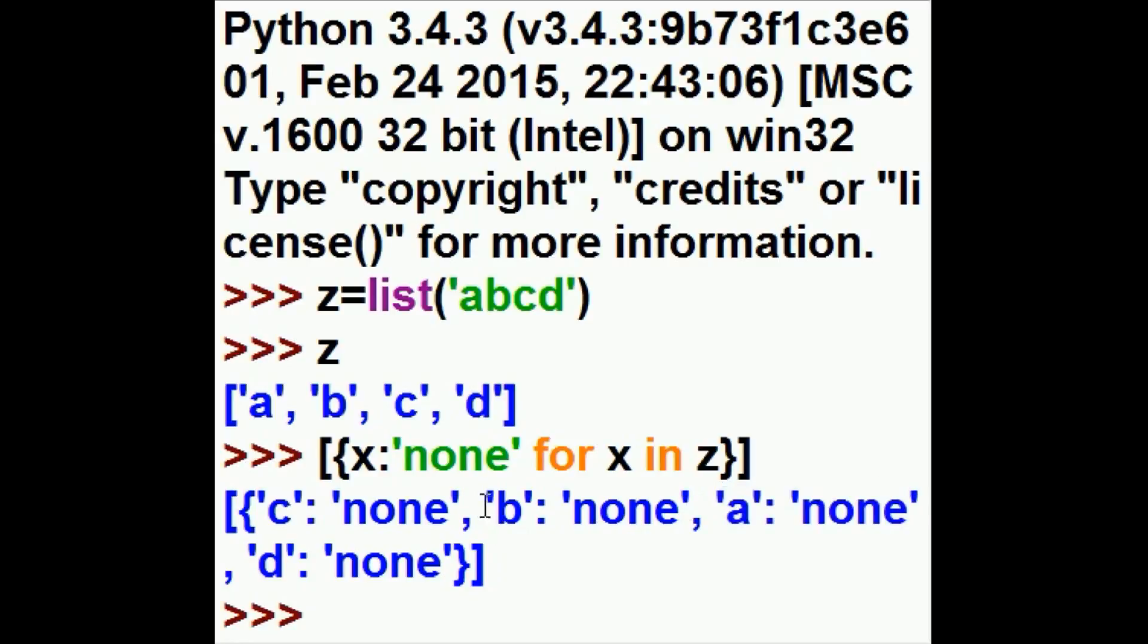A none, B none, C none, and D none. Notice this is not in alphabetical order because this is a dictionary. And so we call this a dictionary comprehension.